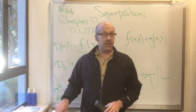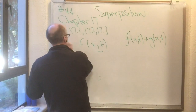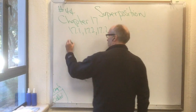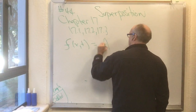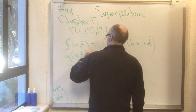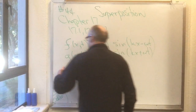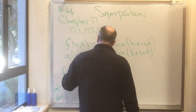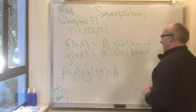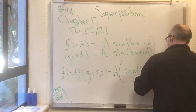Let's look at a specific example. Suppose we have two waves with the same frequency, same wavelength, same amplitude, but moving in opposite directions. Let f(x, t) = A sin(kx − ωt) and g(x, t) = A sin(kx + ωt). By superposition, f + g is also a solution, which gives us A times [sin(kx − ωt) + sin(kx + ωt)].